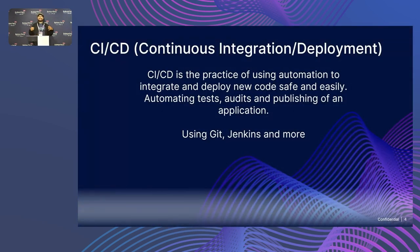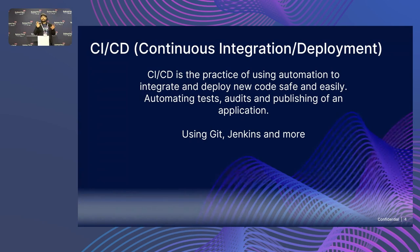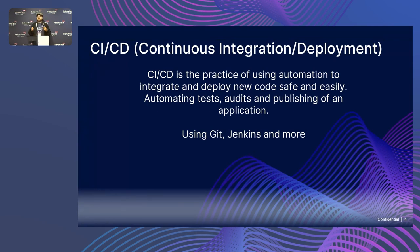CICD stands for continuous integration and continuous deployment. In the world of software development, integration means integrating new code into old code — not just adding it, but doing it safely, without bugs, without hiccups. Deployment is about publishing that code so that application can be used by the world, again doing it safely and without bugs.